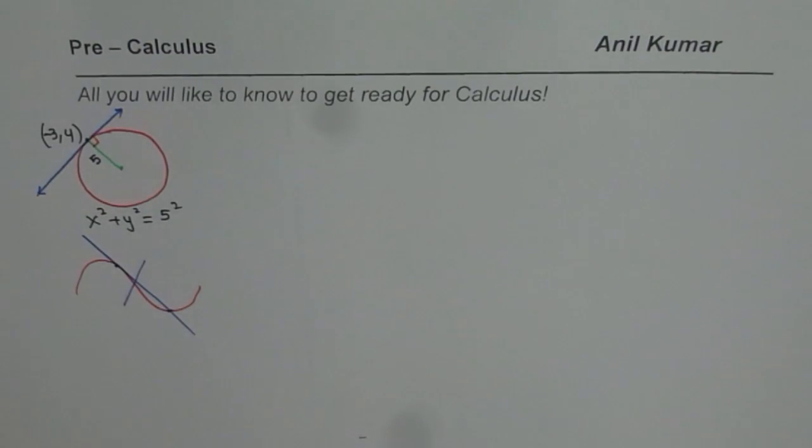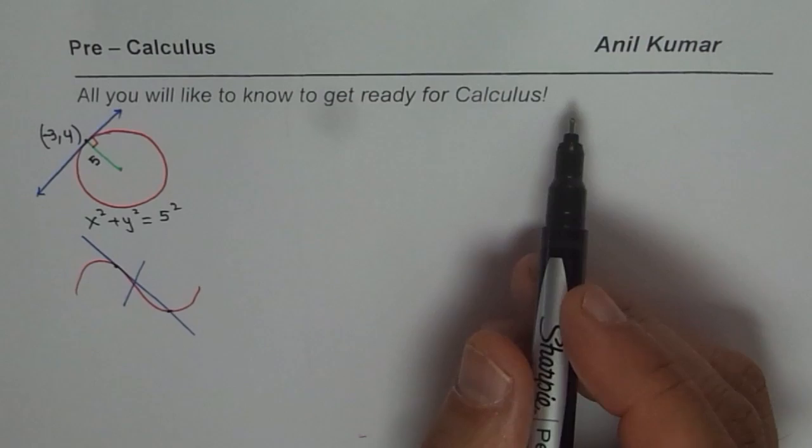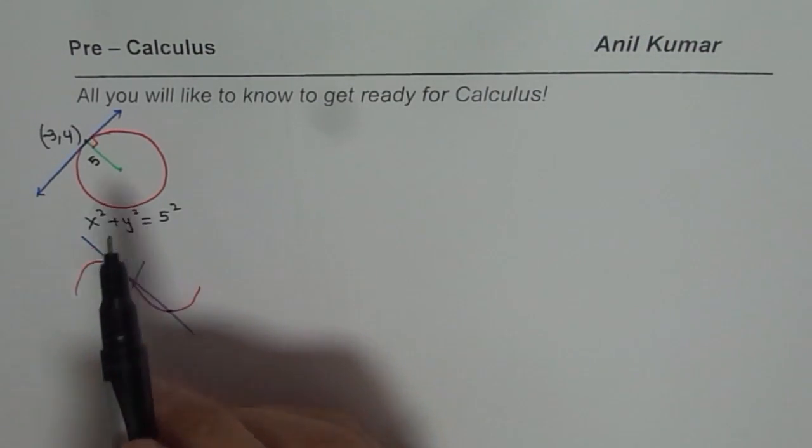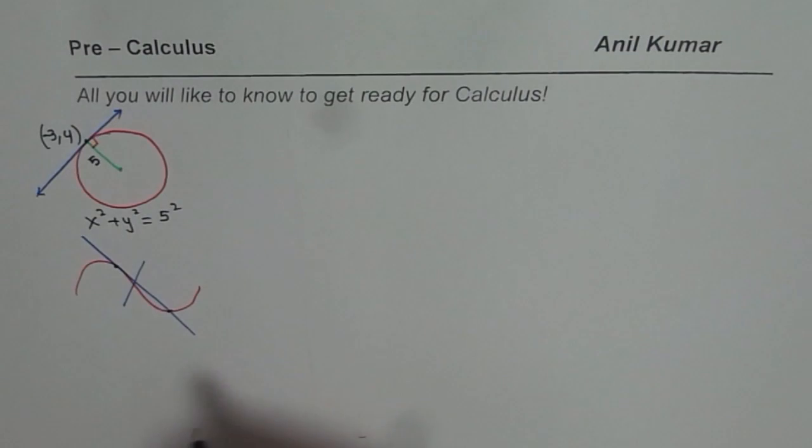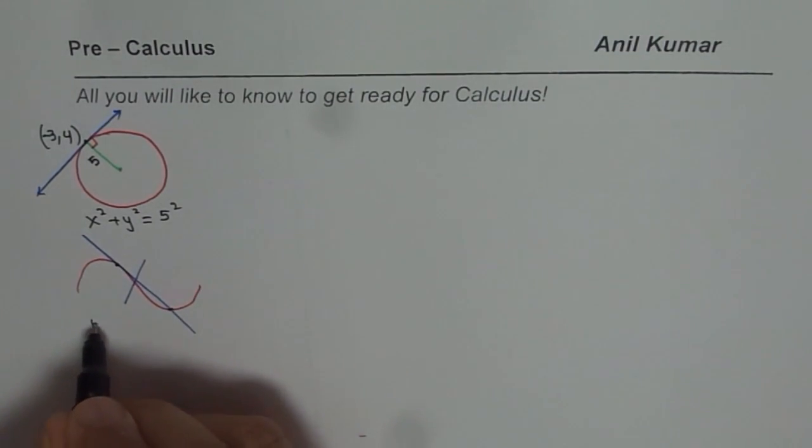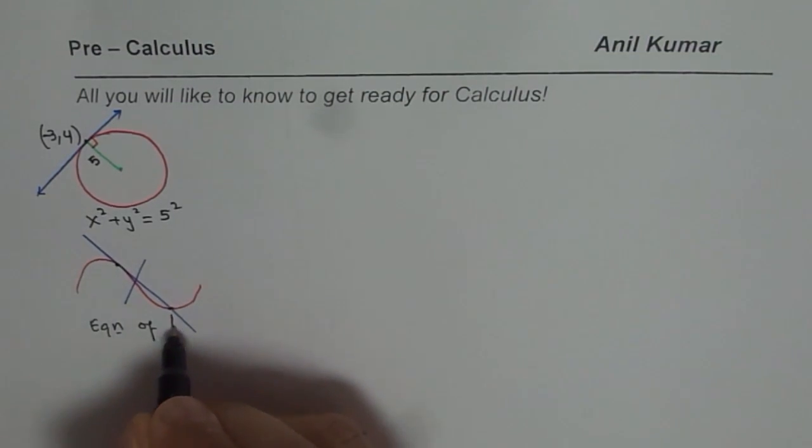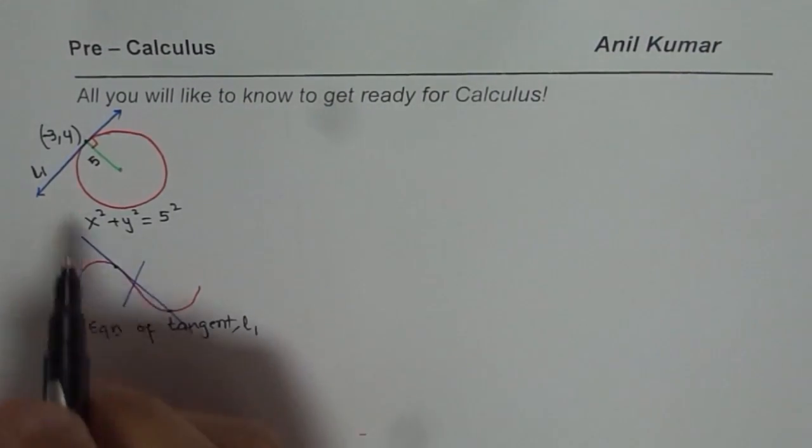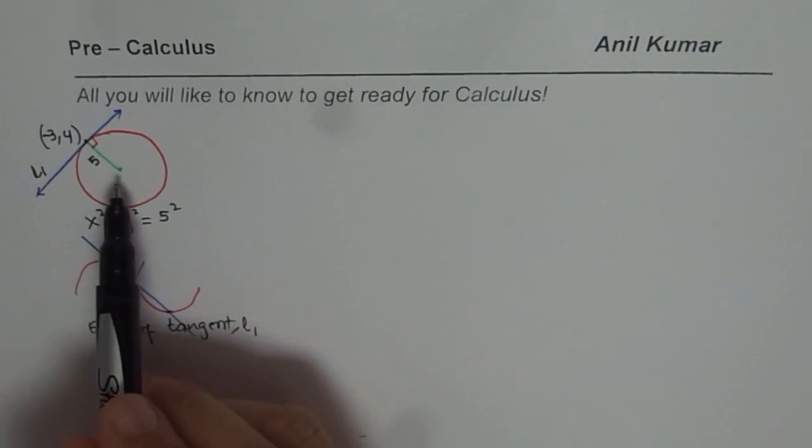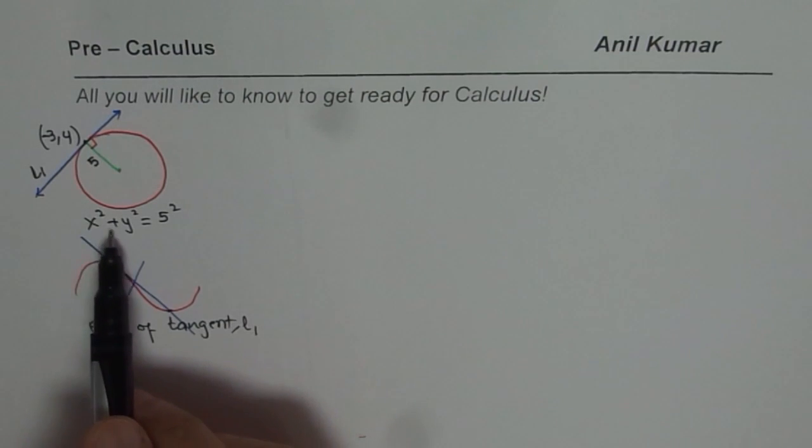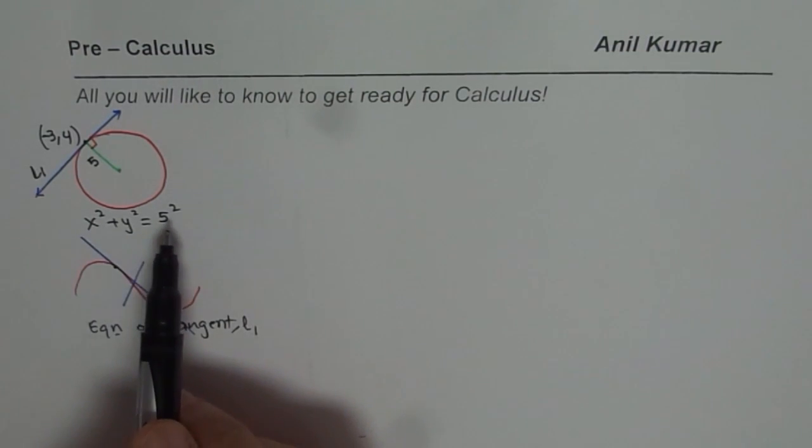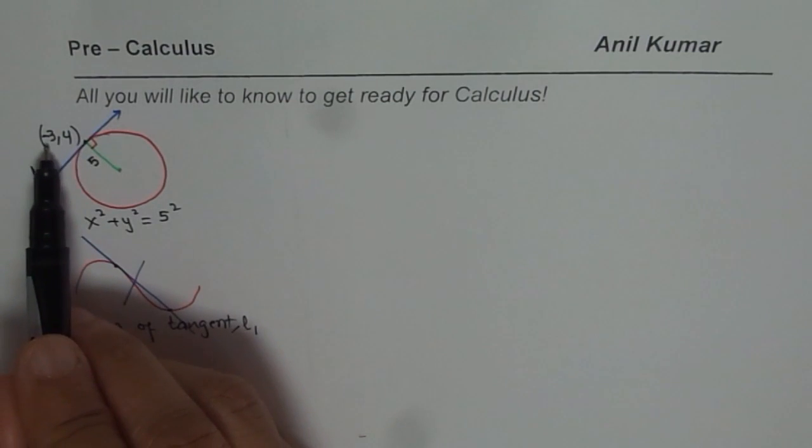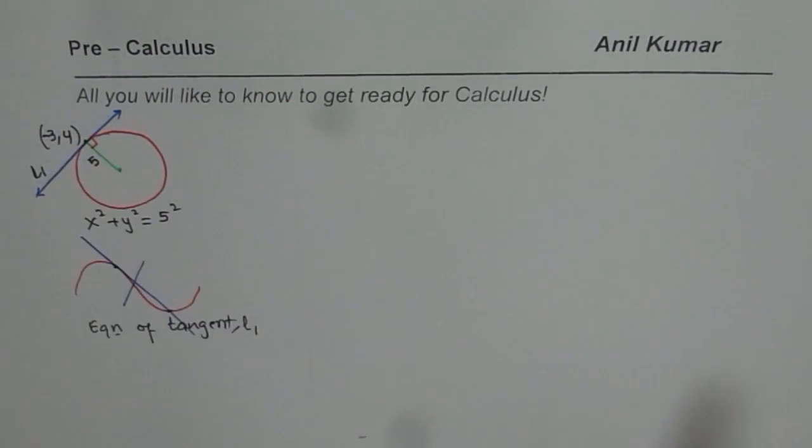Your question is very simple. If you can answer this, you can move forward without looking into any video on tangents. You need to find equation of tangent. This is line L1 - line one is tangent to a circle which is described as x square plus y square equals to five square and it touches at the point minus three four. What you need to find is equation of the tangent.